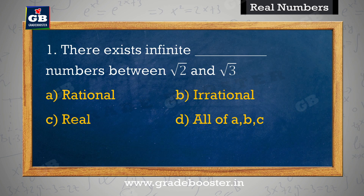There exists infinite numbers between root 2 and root 3. Root 2 aur root 3 ke beech infinite numbers mawujud hai. A. Rational, B. Irrational, C. Real, D. All of A, B, C.